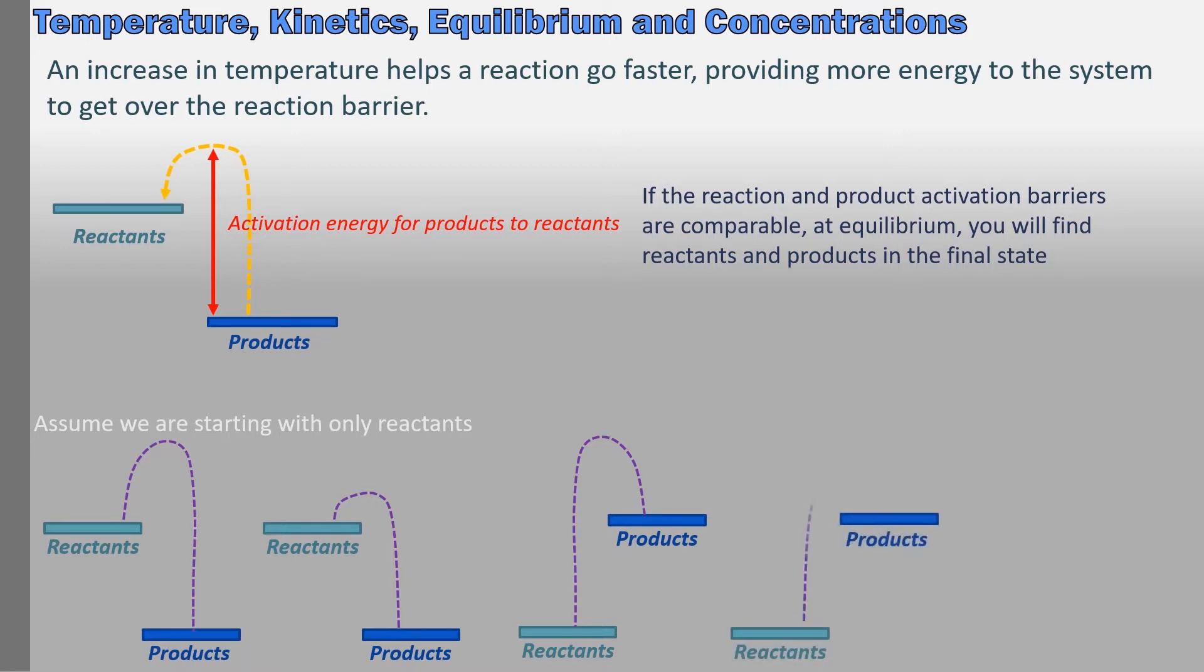The fourth diagram is also endothermic, but the back reaction barrier is so low that any products that form will more than likely go back to reactants. This reaction probably will not run well and very little if any product will form.